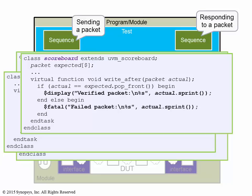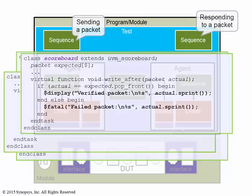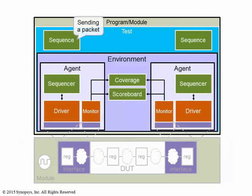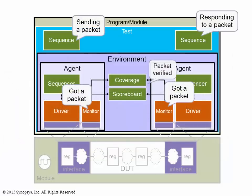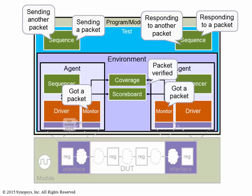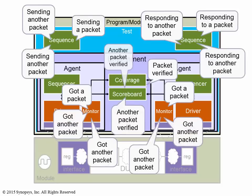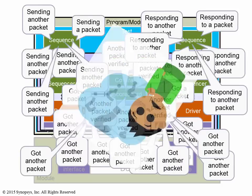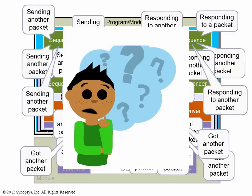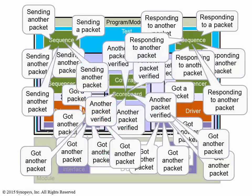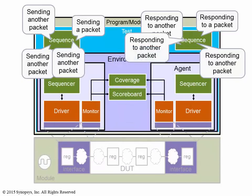The problem is that the SystemVerilog report message mechanism is uncontrolled, resulting in all the messages printing all the time. After a while, you're so overwhelmed by all these messages, you don't even know where to start to look for information. What we need is a controlled report mechanism that will allow us to choose what we want to see and filter out what we don't care about.